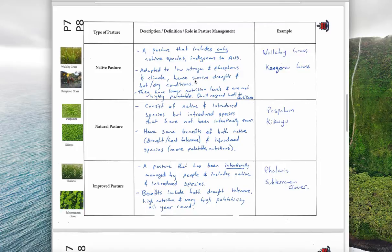However they have lower nutrition levels for the animals and they're not as palatable. The animals don't like to eat them as much as they do improved species - they're just not as tasty. And they don't respond well to fertilizers either. Examples are wallaby grass and kangaroo grass.